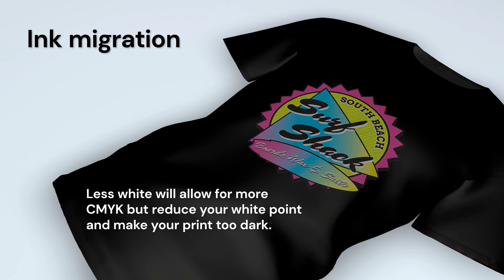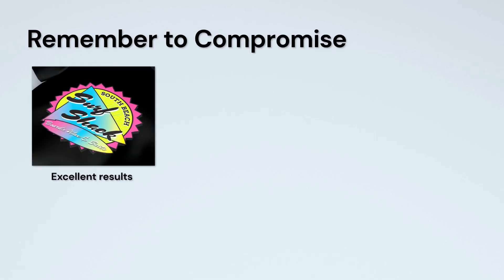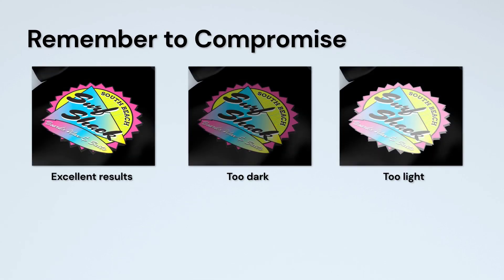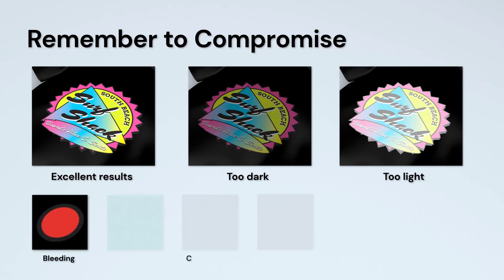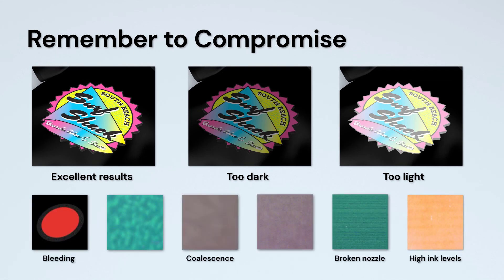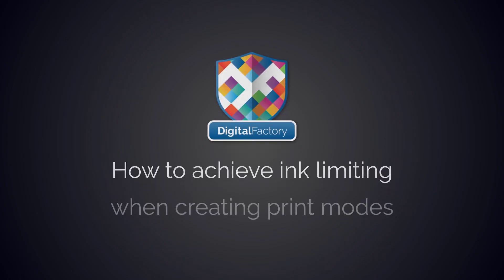Balance here is the key. Compromise is required with most inkjet printers — more ink is better up until you start to run into problems. The trick is to find the point where you get good, strong secondary RGB colors with as little bleed, coalescence, or hardware issues as possible. What is and isn't acceptable depends on the media and your interpretation of what a good print looks like.